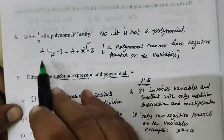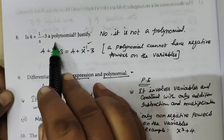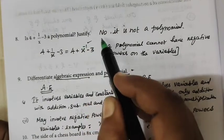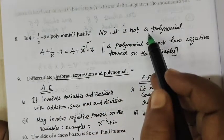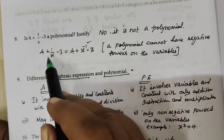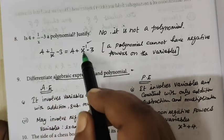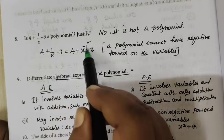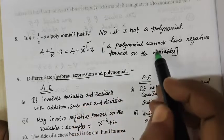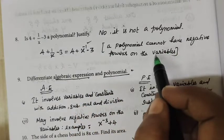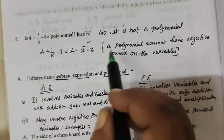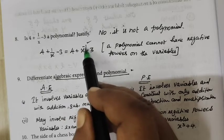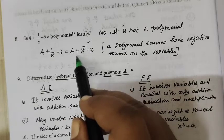Question number 8: Is 4 + 1/x − 3 a polynomial? The statement is wrong. Because 4 + 1/x means x to the power minus 1. The power is negative. For a polynomial, we need only non-negative powers on the variable. This is negative, so this is false.